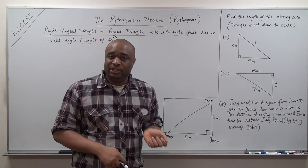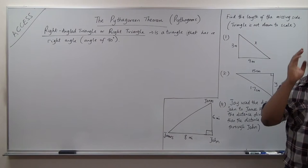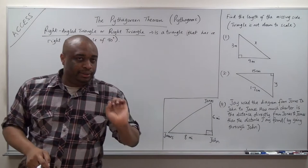Especially when it says it is not drawn to scale, don't come and use your judgment — don't take a protractor to measure the angles. If you see the box, it means it is a right angle, no matter how it looks to you. That is the first thing you need to learn.